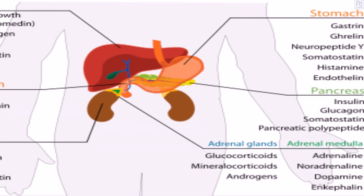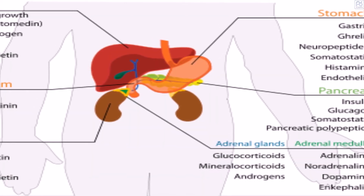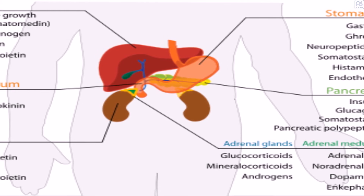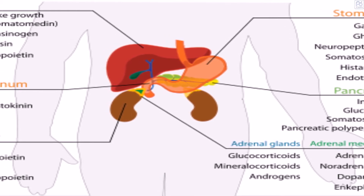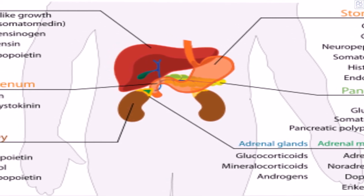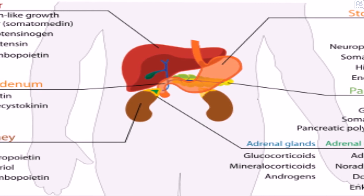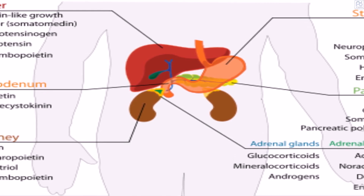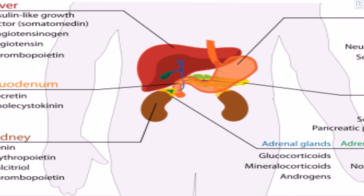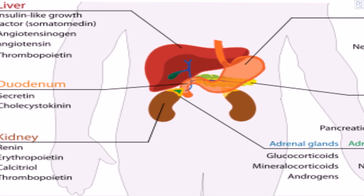In addition to the specialized endocrine organs, many other organs that are part of other body systems — such as the kidney, liver, heart, and gonads — have secondary endocrine functions. For example, the kidney secretes endocrine hormones such as erythropoietin and renin.